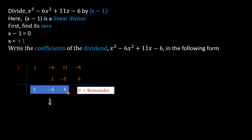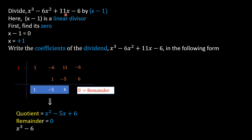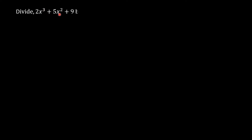Now with these three coefficients we can write the quotient. There are three numbers so we subtract 1, giving degree 2 — a quadratic quotient. Quotient = x² - 5x + 6, where 1 is the coefficient of x², -5 is the coefficient of x, and 6 is the constant term. Remainder is 0. We write the dividend as (x - 1)(x² - 5x + 6).